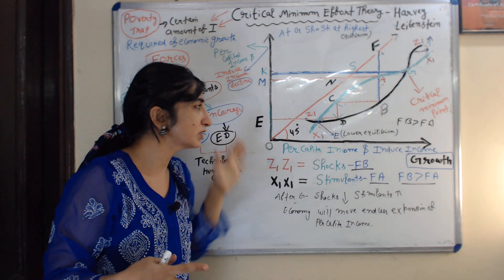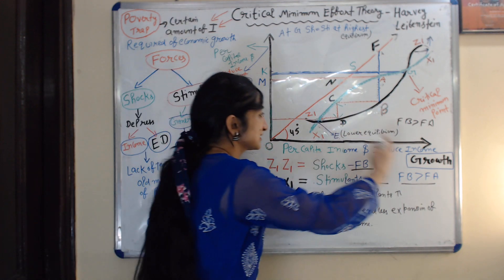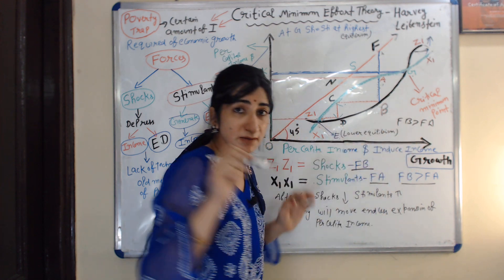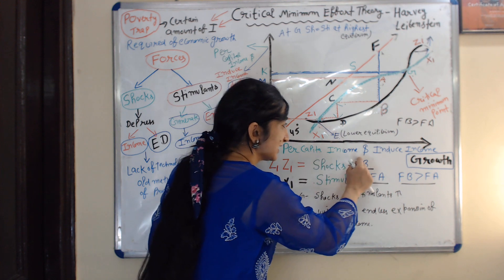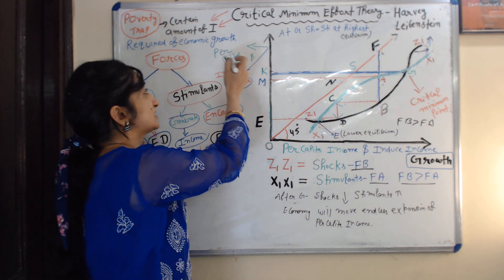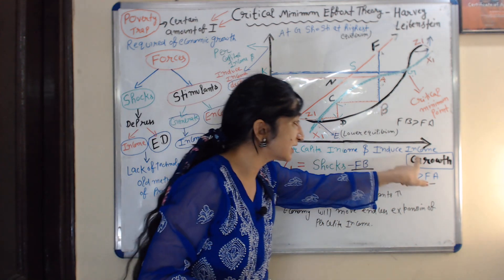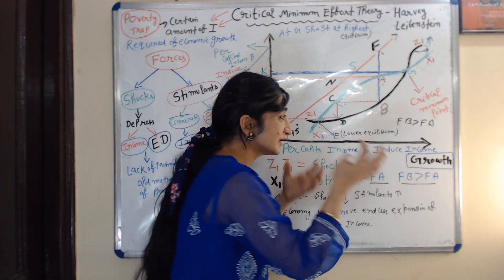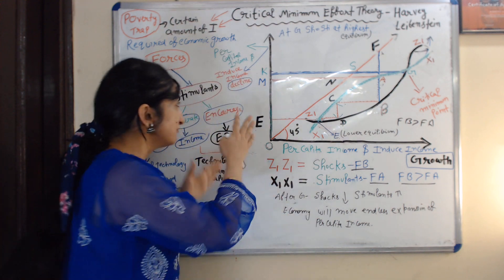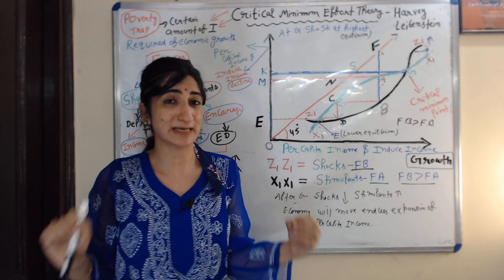To understand the whole concept of this theory, you need to understand this diagram. On the x-axis, we take per capita income and induced income growth. On the y-axis, we take per capita income and induced income decline. So the x-axis represents induced income growth and the y-axis represents induced income decline.